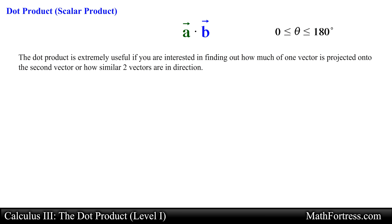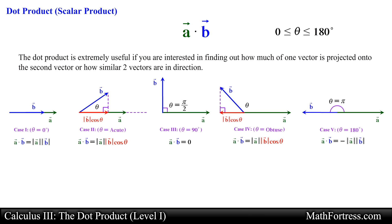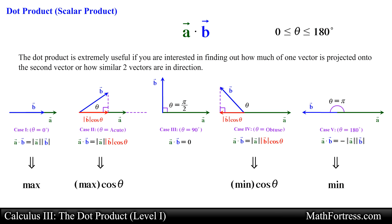Notice that the dot product is extremely useful for finding out how much of one vector is projected onto a second vector, or how similar two vectors are in direction. Looking at all five cases, if the magnitudes of two vectors are constant, the dot product has a maximum value when theta equals 0 degrees and a minimum value when theta equals pi. For angles between 0 and pi, the dot product is some fractional portion of the maximum if theta is acute, and of the minimum if theta is obtuse. In the special case when theta equals pi over 2, the dot product equals 0 and the vectors are orthogonal. In our next video we will calculate the dot product using the component definition.